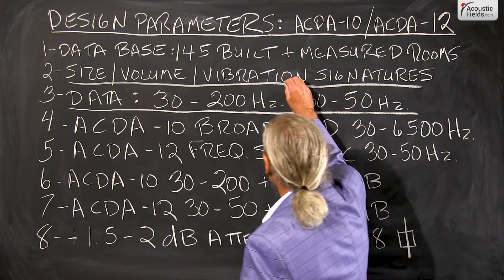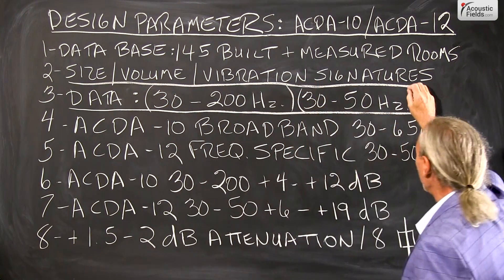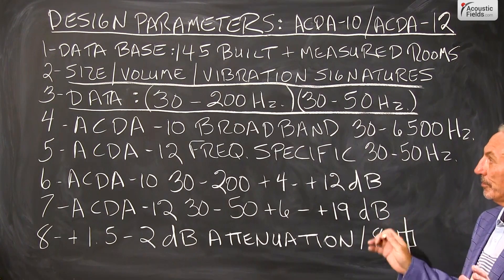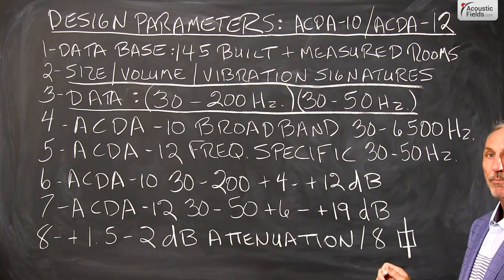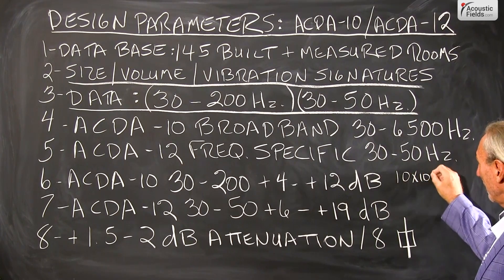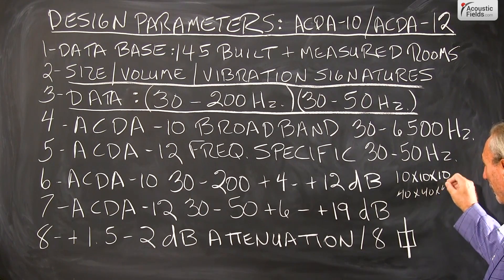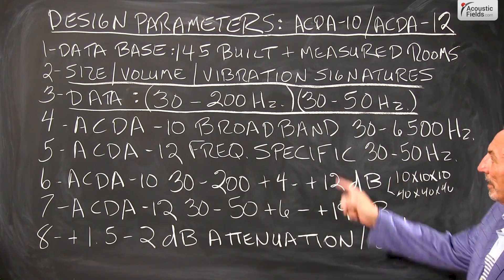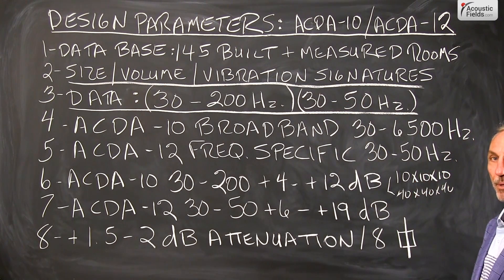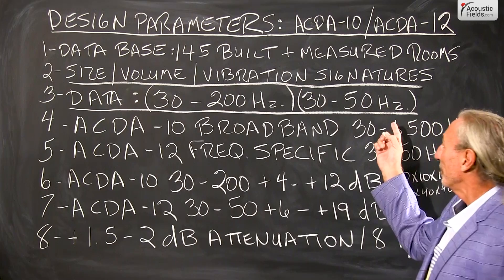So what did we see? If you look at the data, we saw two areas of concern: 30 to 200 Hz and 30 to 50 Hz. Of all the rooms, those two frequency response ranges stood out. Our room sizes ranged from our smallest at 10 by 10 by 10 to our largest at 40 by 40 by 40, with 143 rooms in between those dimensions — so we probably have your room in our database. We noticed the 30 to 200 and the 30 to 50 Hz ranges consistently.